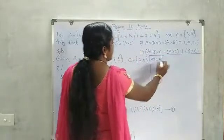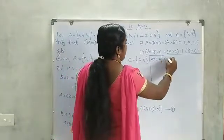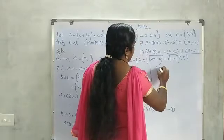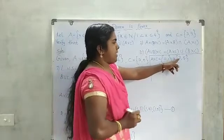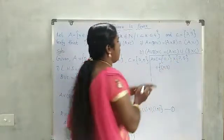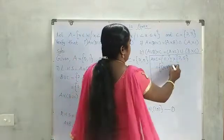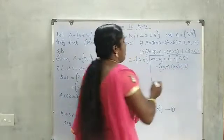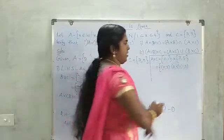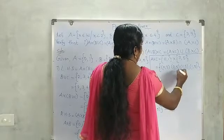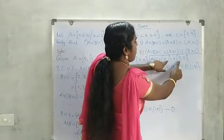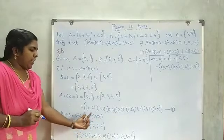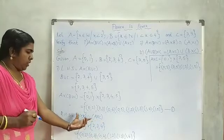Next we find A cross C. A is {0, 1} cross C which is {3, 5}. Writing as ordered pairs: (0,3), (0,5), (1,3), (1,5). This is A cross C. Now we find (A cross B) union (A cross C). First find A cross B, then A cross C, then find the union of both.